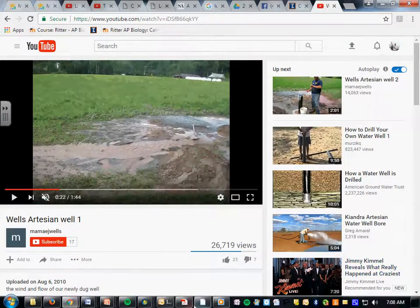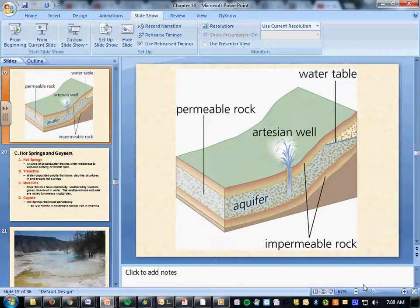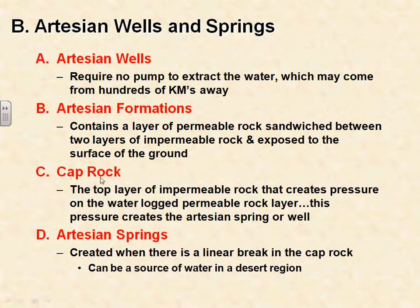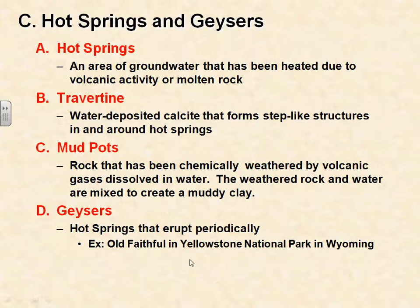Cap rock is an impermeable rock layer that allows pressure to build or holds mineral deposits, oil, and natural gas. An artesian spring is where water comes to the surface because of a break in the cap rock, pushing water up. An oasis in the desert would be an artesian spring type of feature.